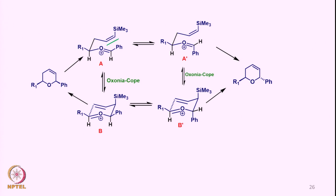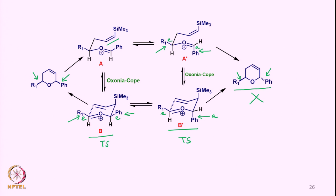We can write the same thing in a slightly different way. This is the vinylsilane we started with, and once the oxonia-Cope rearrangement occurs, we can think of a transition state in which the phenyl group and R1 are equatorial. The other possibility is that we orient the phenyl group as axial and let R1 be equatorial — then phenyl and R1 would be on opposite sides of the cyclic structure. Obviously the first transition state is more stable than the second, and therefore this is the product that is formed.